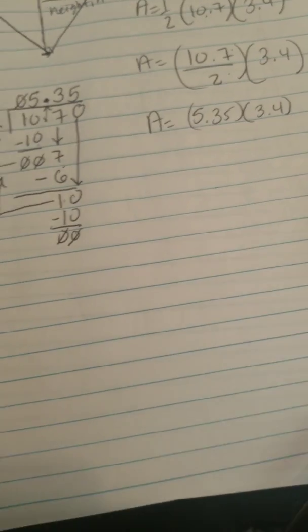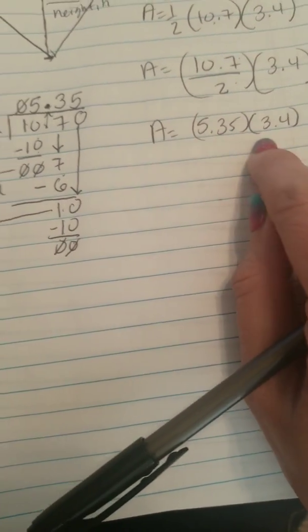Now remember, I have to take that 5.35 and multiply it by the height. So this is a multiplication problem now. We have 5.35 times 3.4.